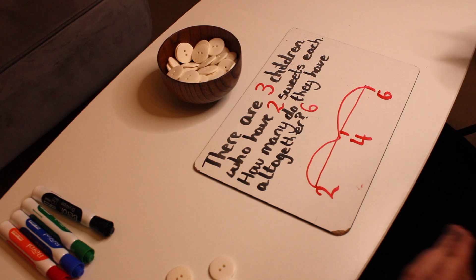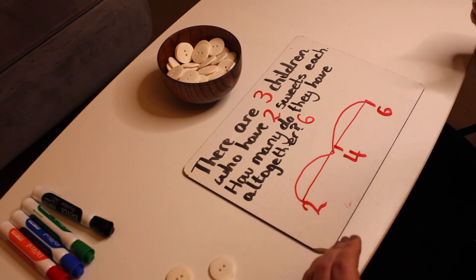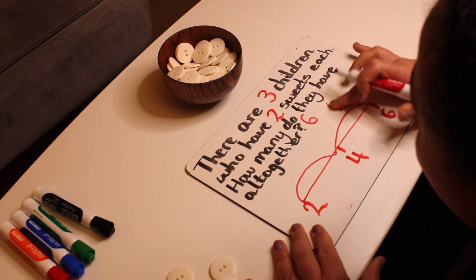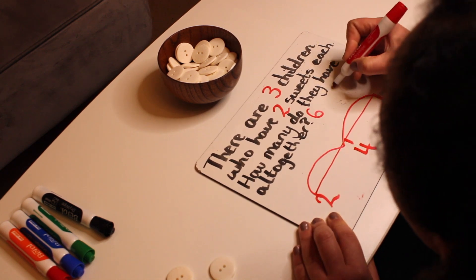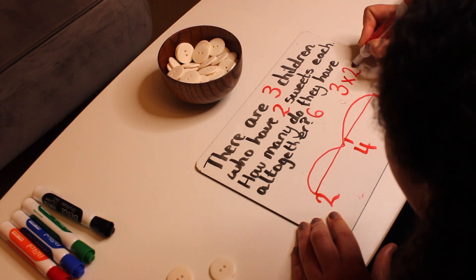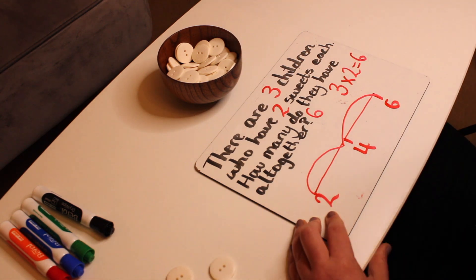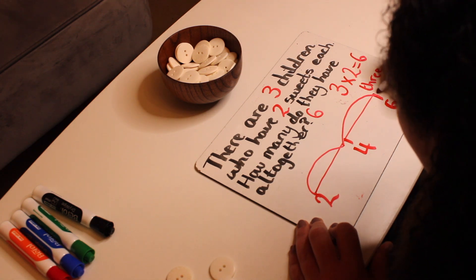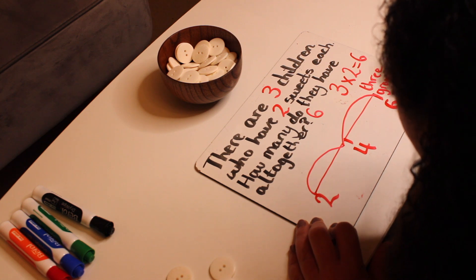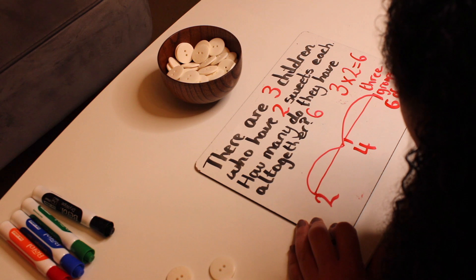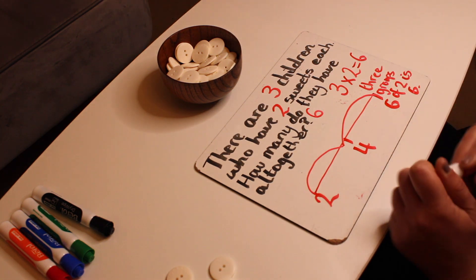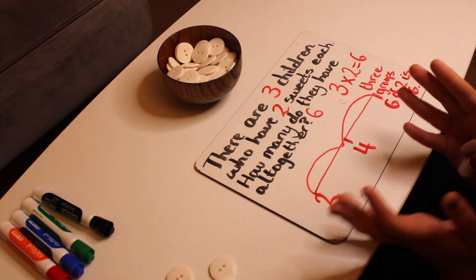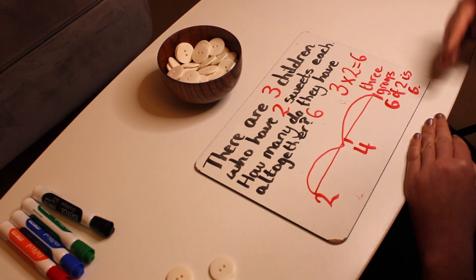Now you can also start moving on and saying, well, how does that look as a times table? And it looks like this, three times two equals six. This is also the same as saying three groups of two is six. So here we have all three methods explored. So we've explored our concrete methods, moving on to our pictorial methods, and then deepening our understanding with our abstract methods.